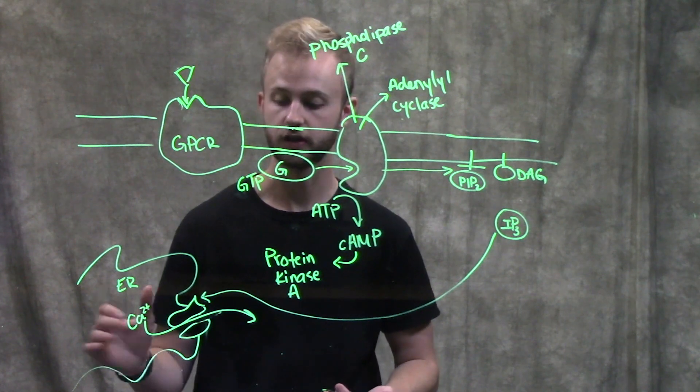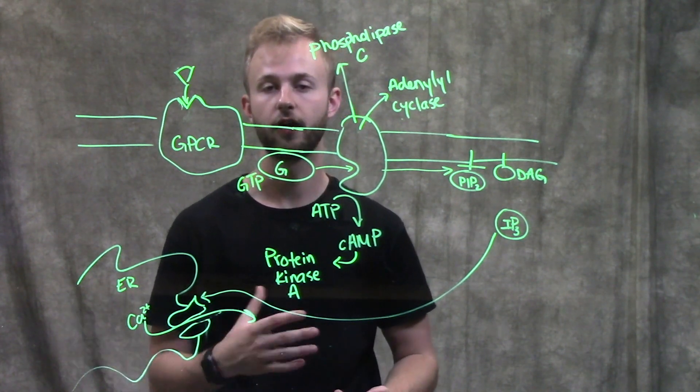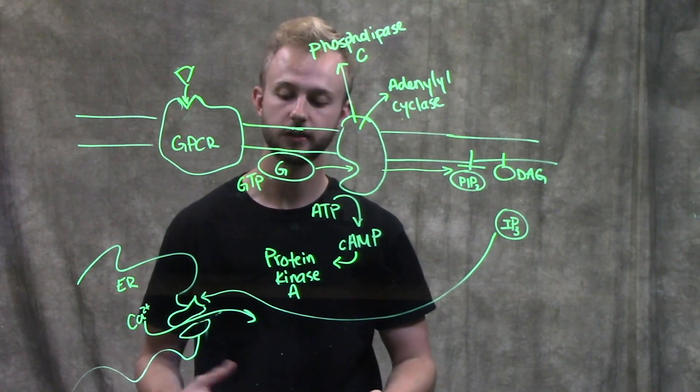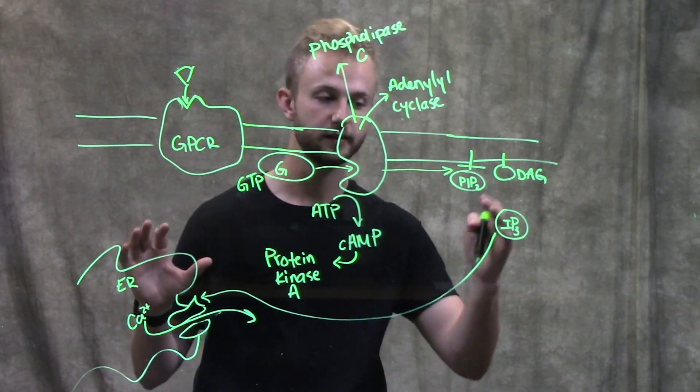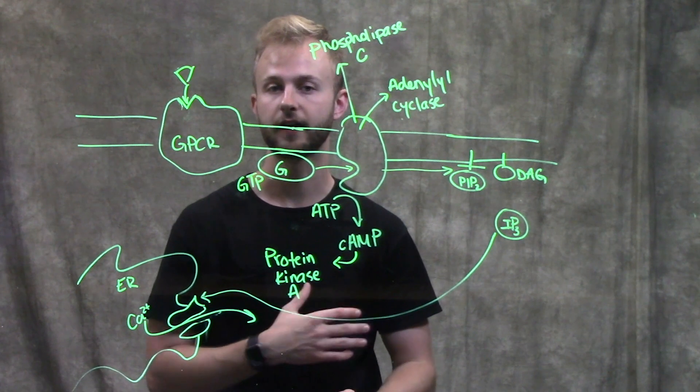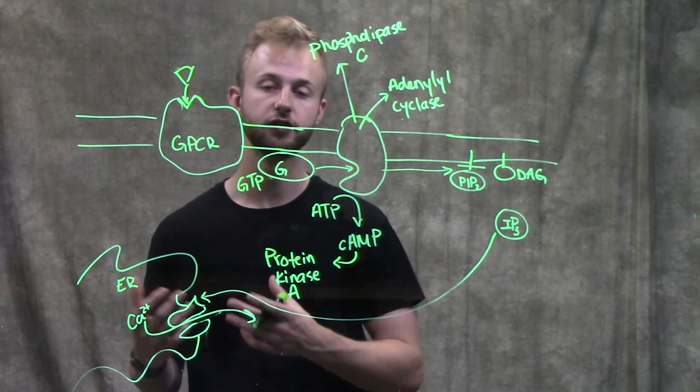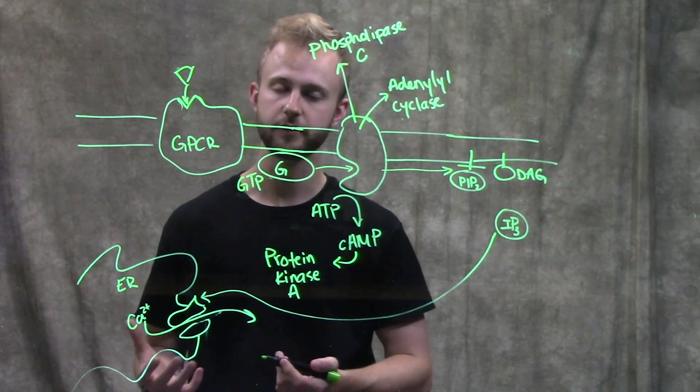For example, muscle contraction is caused by calcium coming out of the sarcoplasmic reticulum, which is the ER in a muscle cell. And so this signaling through IP3 and calcium flooding into the cytoplasm of the cell is a really important second messenger pathway.